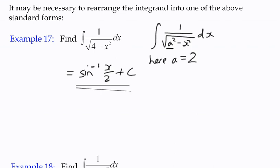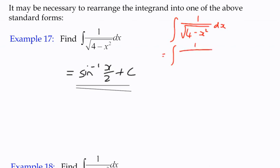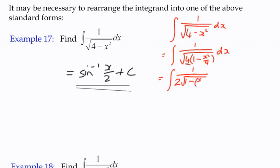I'll take a moment to show you why you don't have to use that standard form. If we think about that denominator under the square root, we can take a common factor of four to get one minus x squared over four, then take the four out of the square root to become two times the square root of one minus x over two squared.